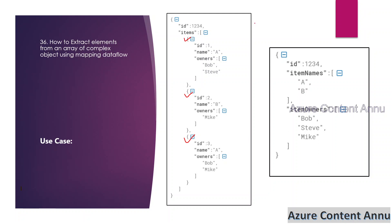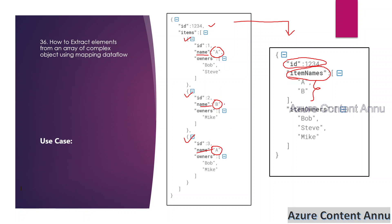What we want to achieve with data flow transformation is to convert this JSON into an output JSON where the first property 'id' remains as it is from the input. We also want a property called 'item_names' containing all the unique names from the items array. The name property holds 'a' for the first JSON, 'b' for the second, and 'a' again for the third — so the unique elements are just 'a' and 'b'.